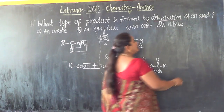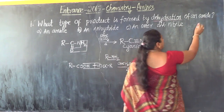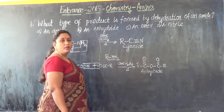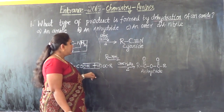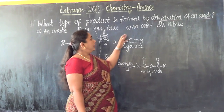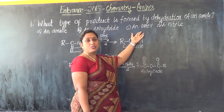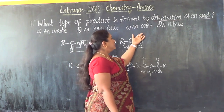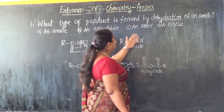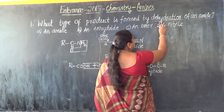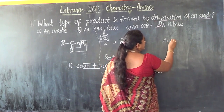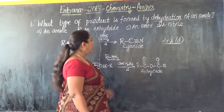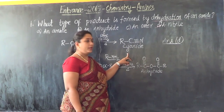Since our starting material is an amide and not a carboxylic acid, it is not an anhydride. An ester would be obtained from carboxylic acid reacting with an alcohol. So none of the first three options apply. The correct answer is D — a nitrile. Dehydration of an amide gives a nitrile; organic cyanides are called nitriles.